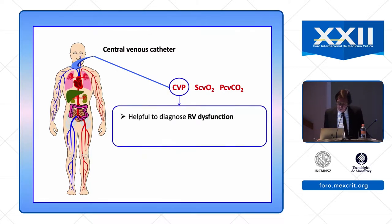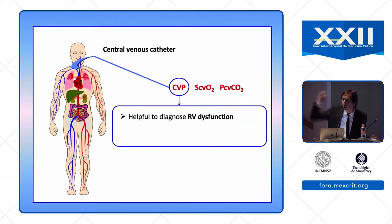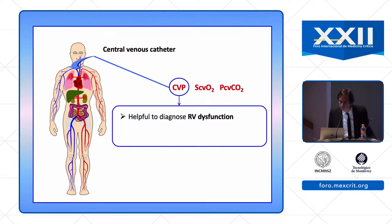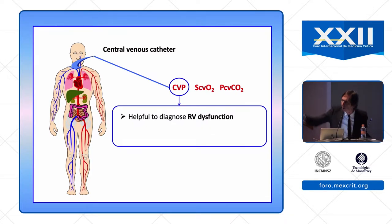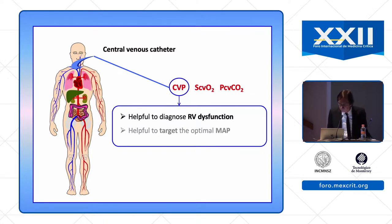The central venous catheter can provide CVP, ScvO2, and PcvCO2. CVP is helpful to diagnose RV dysfunction: when you have a high CVP you can detect RV dysfunction, which you can confirm by echocardiography.